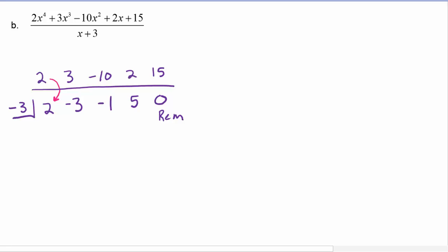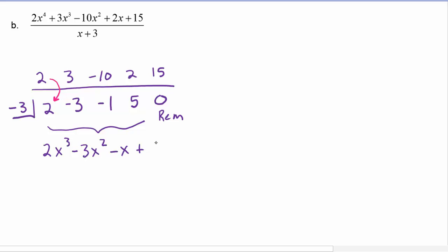Because the numerator had degree 4 and we were dividing by an x, our depressed polynomial will begin with degree 3. This tells us that we're going to have 2x cubed minus 3x squared minus x plus 5 as our quotient.